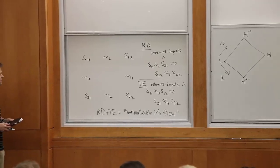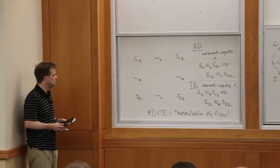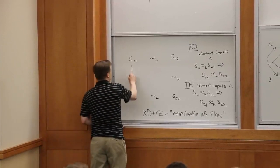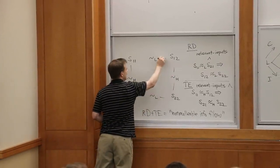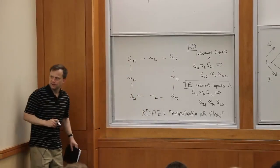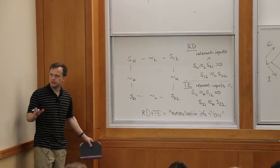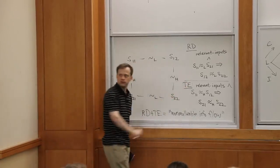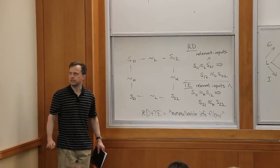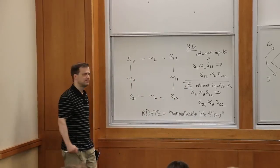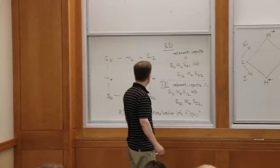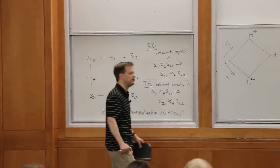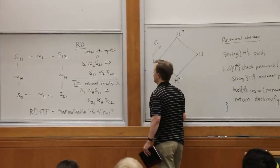A question: in that diagram, is it an assumption that S11 and S21 are tied together? Yes — we're assuming that we have a set of four states related like that, and then these implications show the respective security conditions. This is much more symmetrical and dual than what we had before, so that's satisfying.